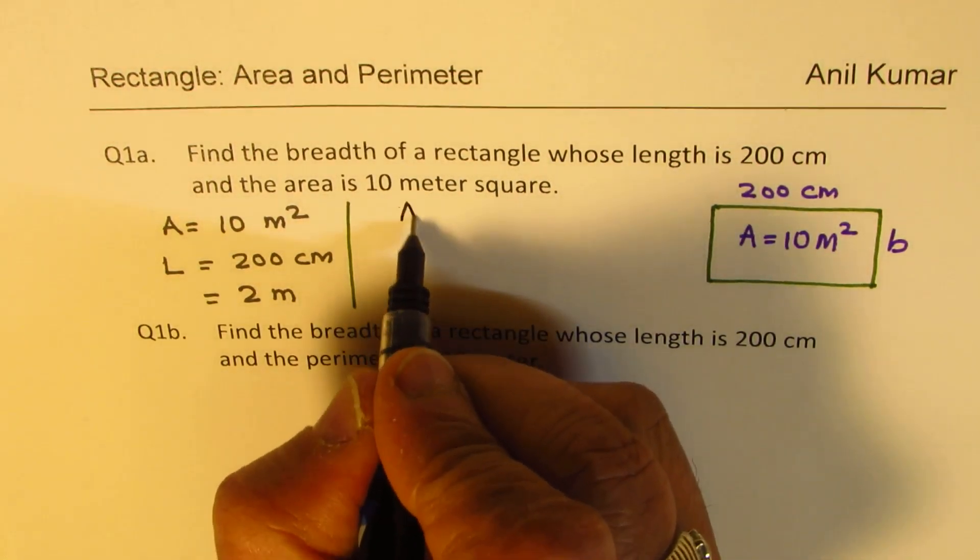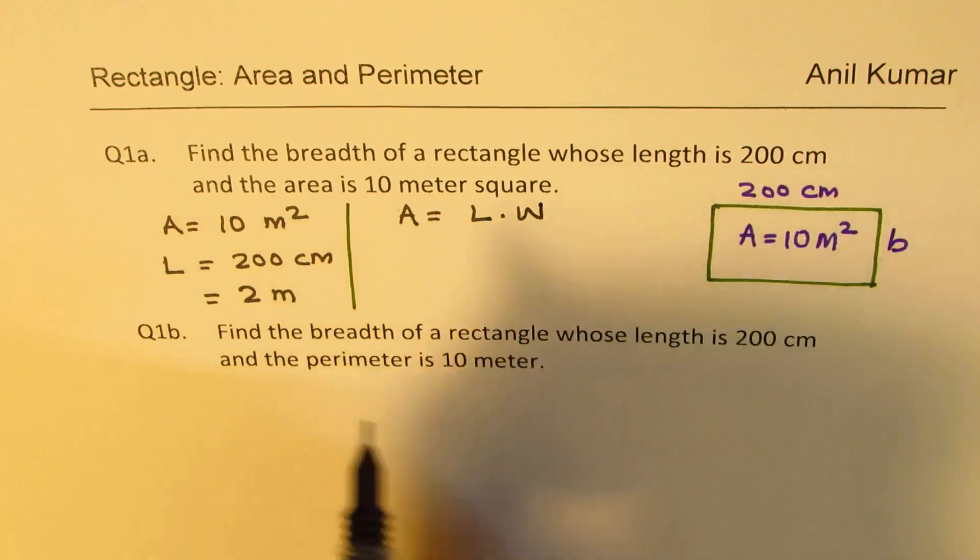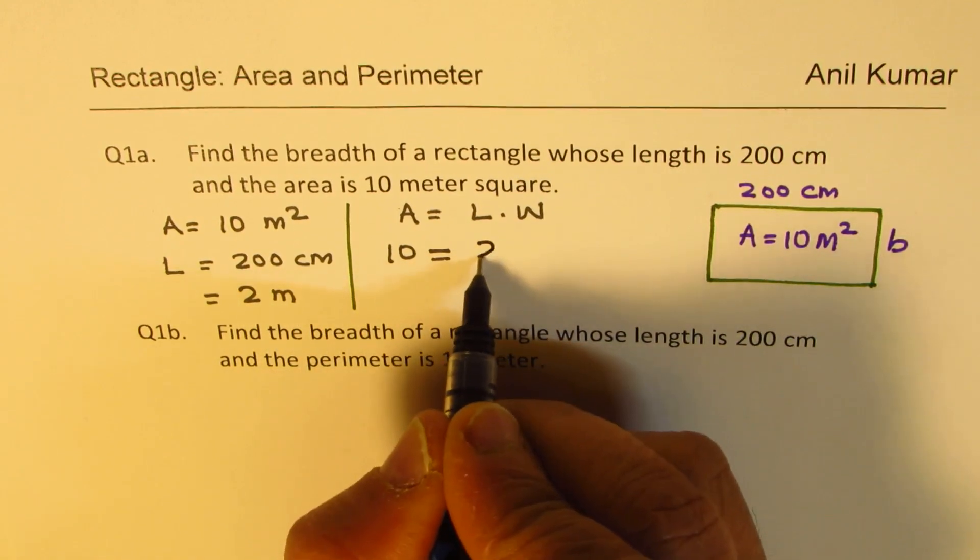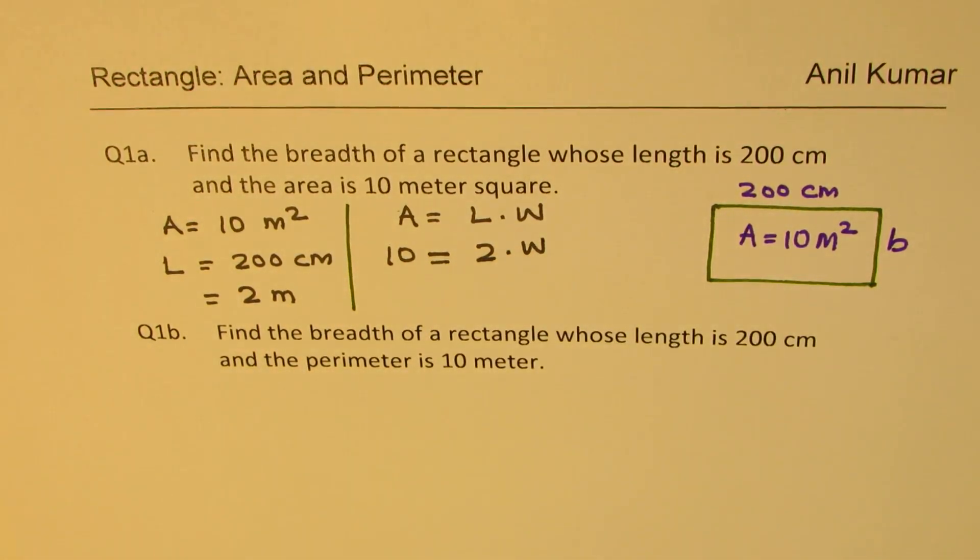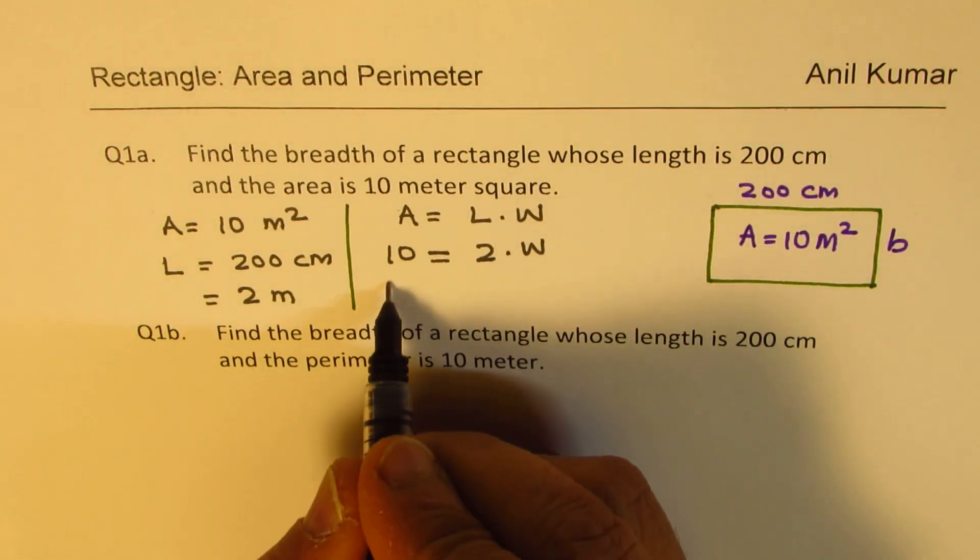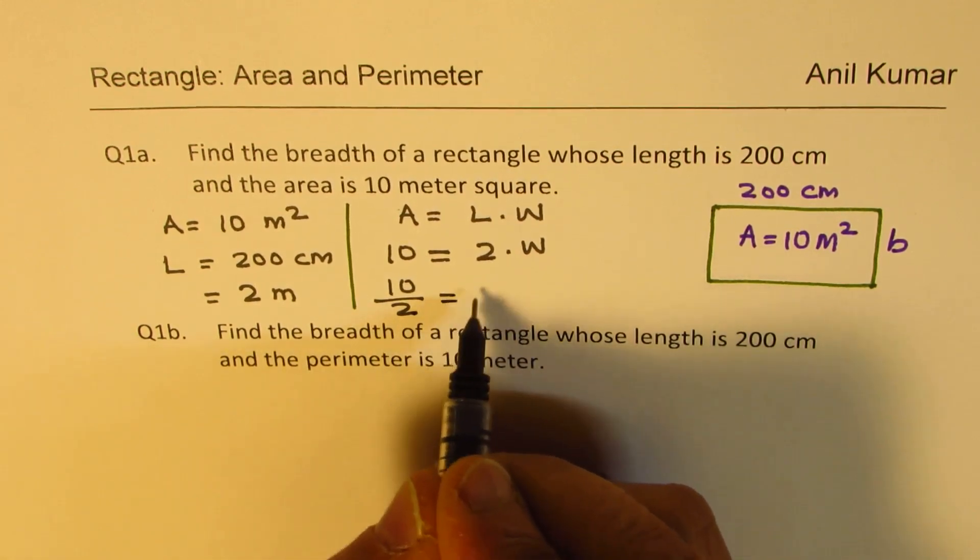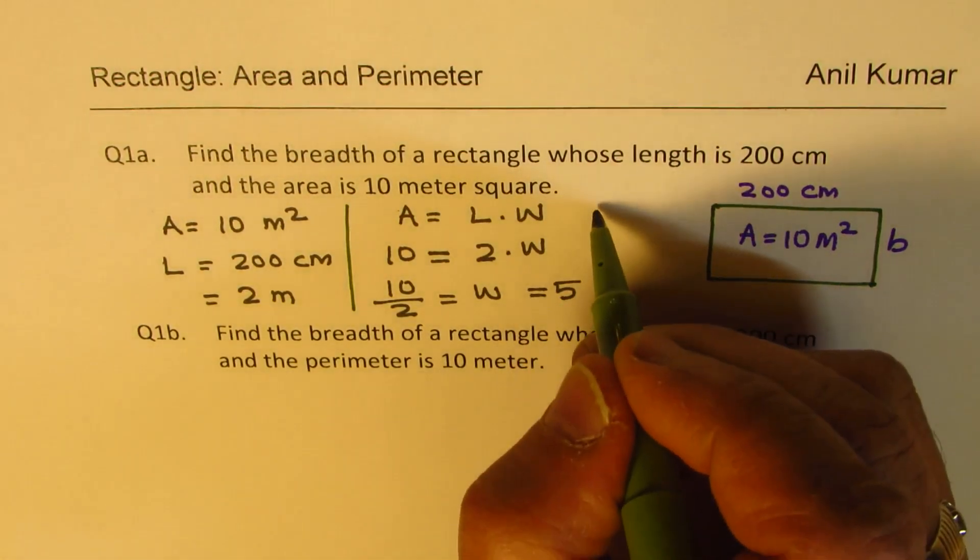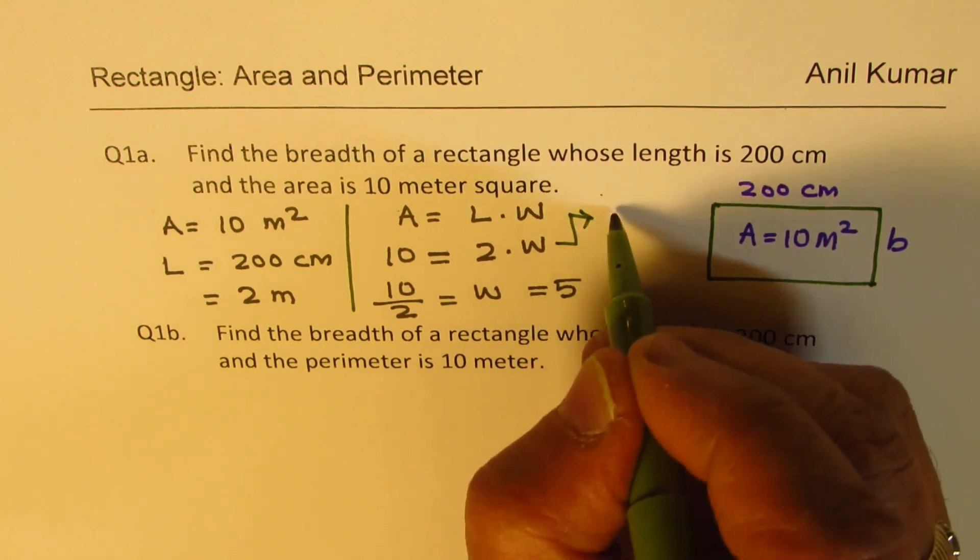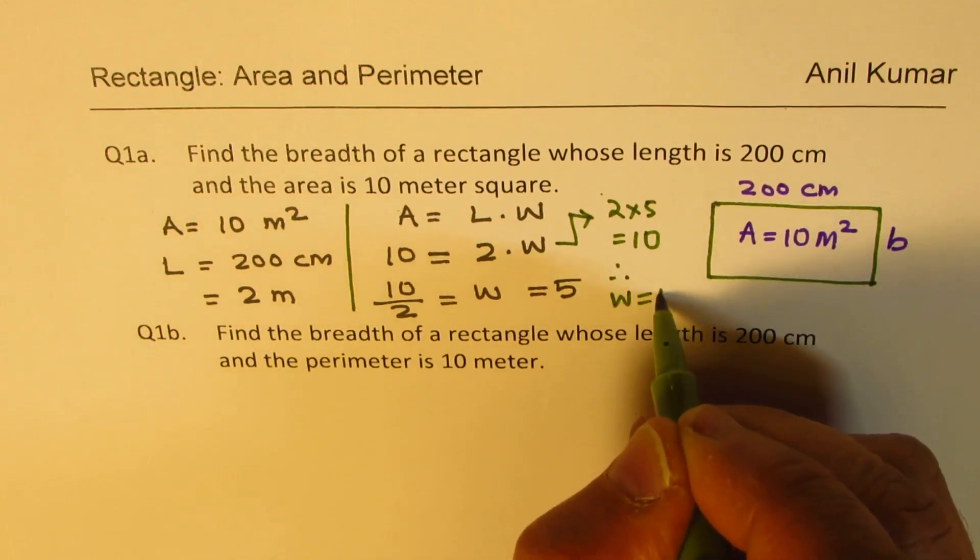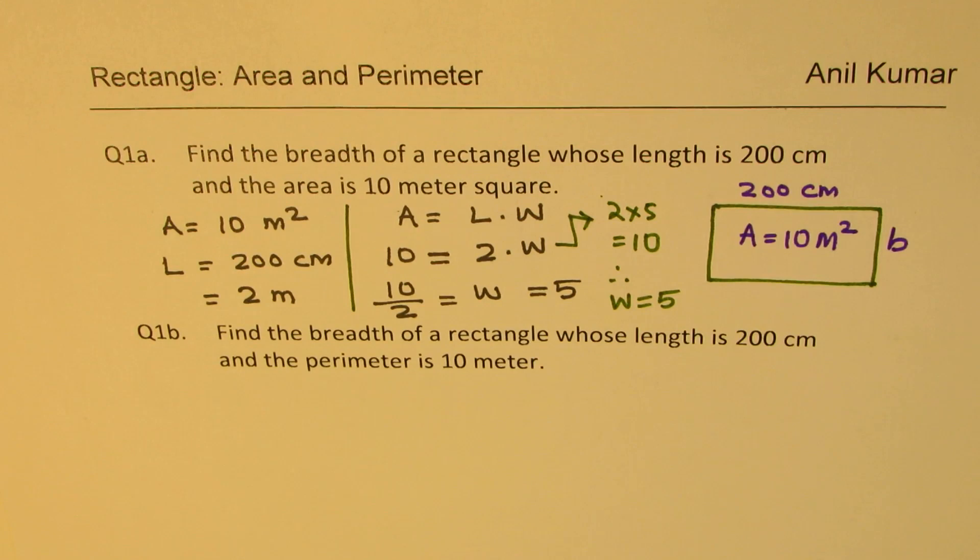Now area is equal to length times width. Area is 10, length is 2, and we need to find the width. So 2 times what is 10? 2 times 5 is 10. You could do it like that, or you can say 10 divided by 2 is width, which is 5. When you get this kind of equation, you can say 2 times 5 equals 10, therefore width equals 5. That is how we can easily explain this concept to a junior school student.